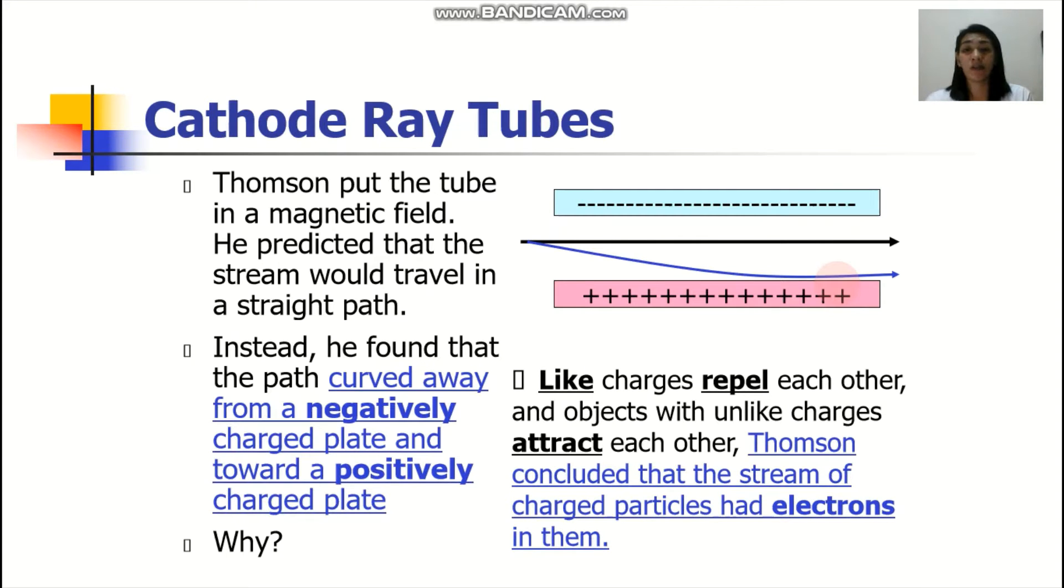He recalled, if we could still remember, di ba, like charges repel each other, and objects with unlike charges attract each other. From this experiment, Thompson concluded that the stream of charged particles had something negatively charged, and then later on, he called them your electrons.